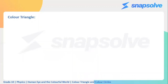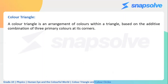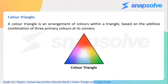What is a color triangle? A color triangle is an arrangement of colors so that we can visualize the mixing of the three primary colors. The three primary colors — red, blue, and green — are placed at the vertices of the triangle. When we add only two primary colors, we get secondary colors, and in the color triangle, the secondary colors appear between two vertices.